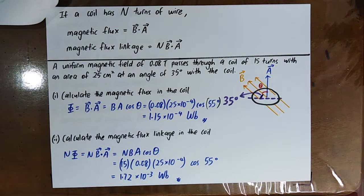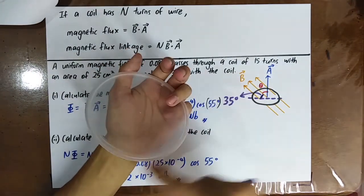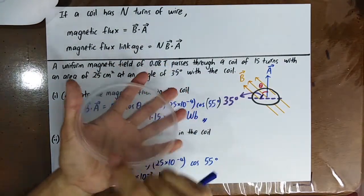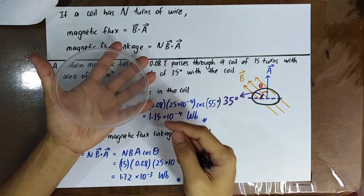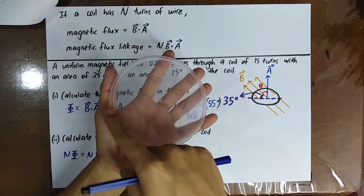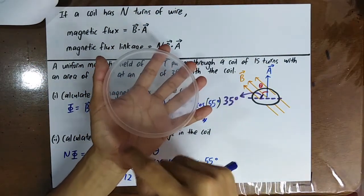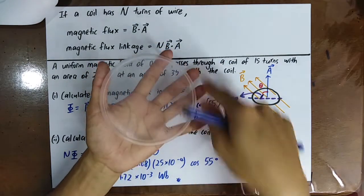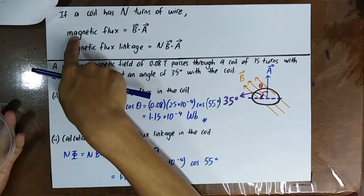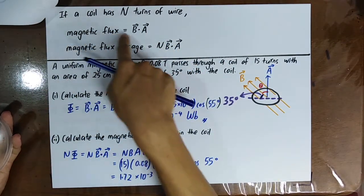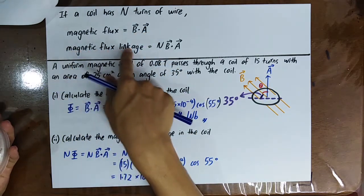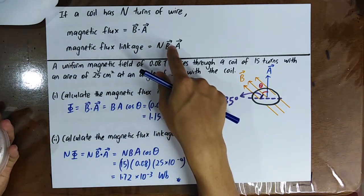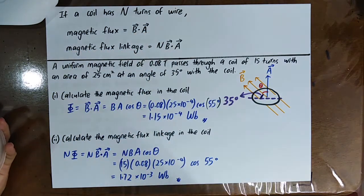Previously we only had one turn of a coil. If you now have N turns of wire, the magnetic flux is B dot A, and the magnetic flux linkage is N times B dot A.